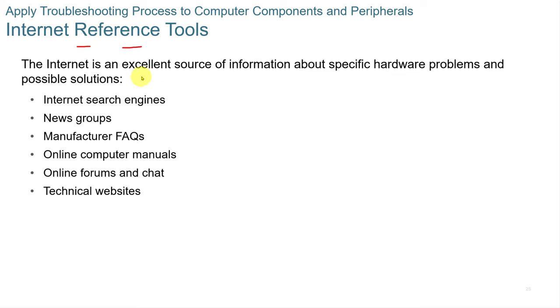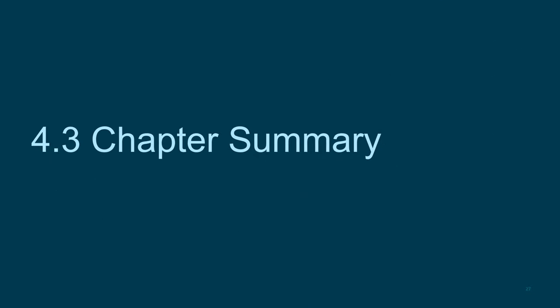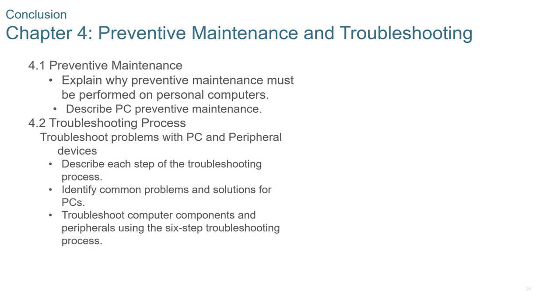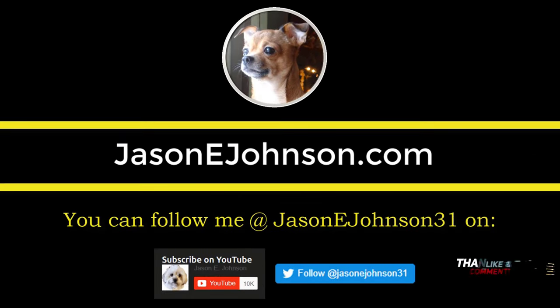For internet reference tools, maintain good sources of information about specific hardware problems and possible solutions — such as quick links to manufacturer websites and downloaded PDF manuals. You can also check newsgroups, manufacturer FAQs, online forums and chats, and technical websites related to the hardware and software you're working with. Thank you.